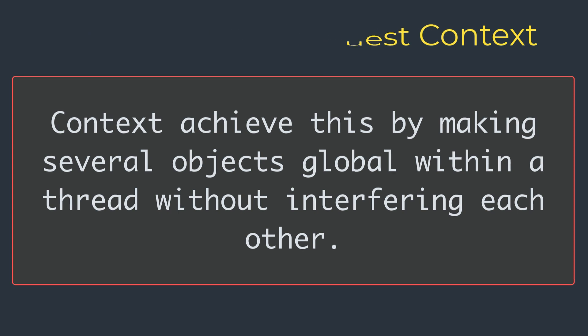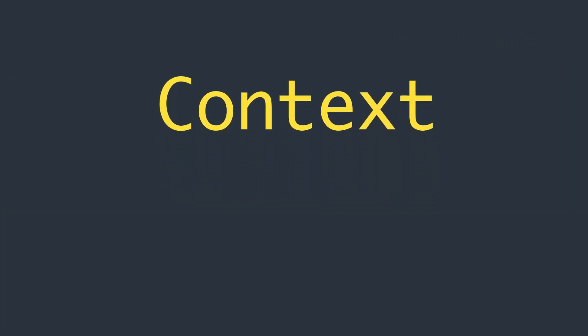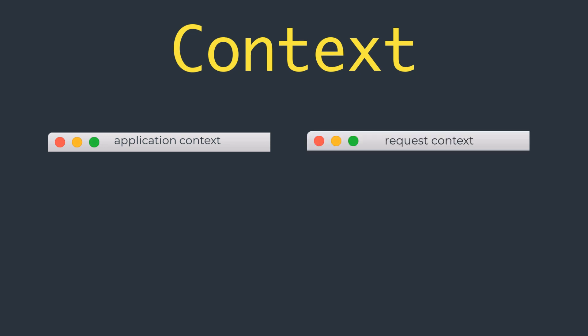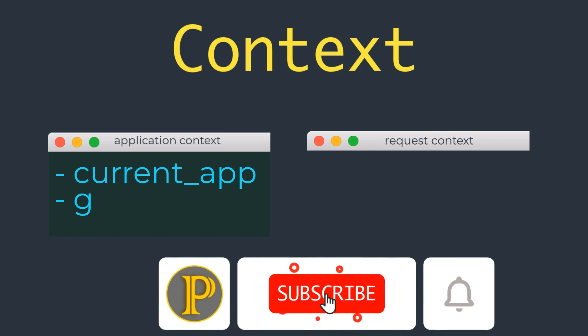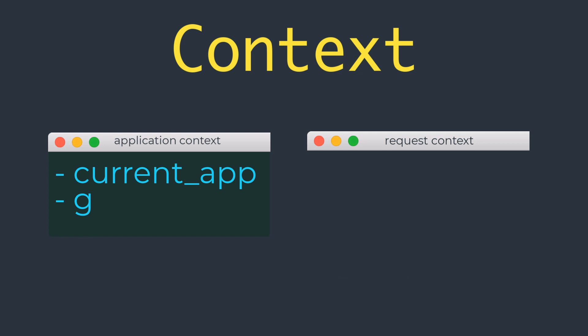There are two contexts in Flask: the application context and the request context. Two variables are available in the application context: the first is current_app, which is an instance of the active application, and the second is g, an object that the application can use for temporary storage during the handling of a request — this variable is reset with each request. The request context also has two variables: request, which encapsulates the contents of an HTTP request sent by the client, and session, a dictionary that the application can use to store values remembered between requests.